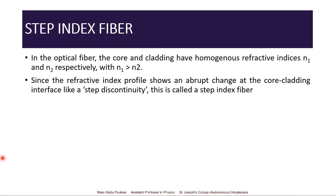Now let us see the different types of fibers. The first one is the step index fiber. Here, the core and cladding have homogeneous, uniform refractive indices n1 and n2 respectively, with n1 greater than n2 — the refractive index of the core is greater than that of the cladding. The refractive index profile shows an abrupt change at the core-cladding interface like a step discontinuity, hence it is called a step index fiber.